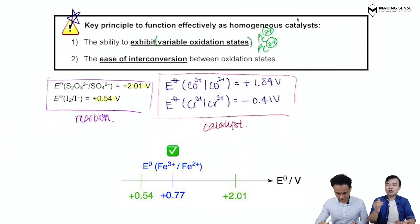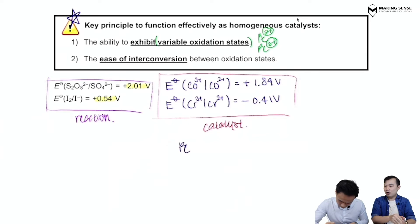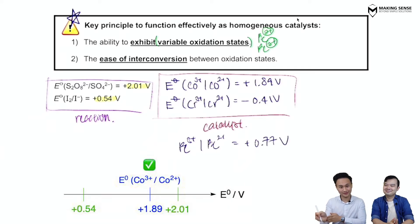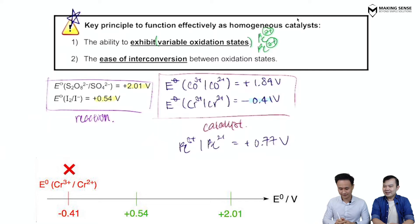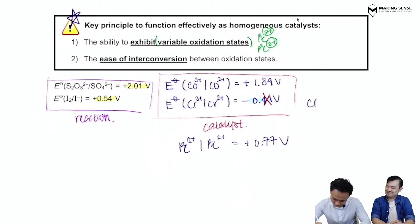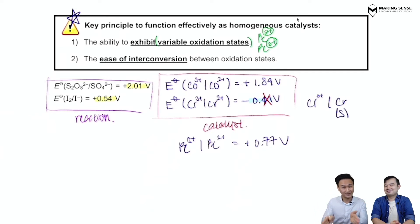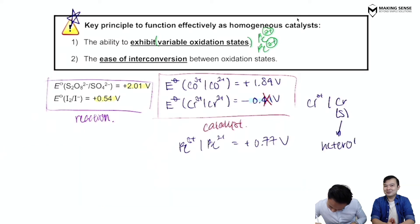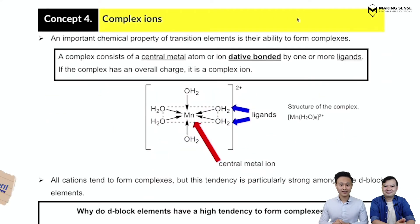For Fe²⁺/Fe³⁺, the E⁰ value is +0.77 V, which falls between +0.54 and +2.01 — satisfying the criteria. For Co³⁺/Co²⁺, the value is +1.89 V, which also falls in range. For Cr³⁺/Cr²⁺, it does not fall in range. As for Cr³⁺/Cr solid, chromium in the solid state cannot be used for homogeneous catalysis since it must be in the same phase as the reactants.